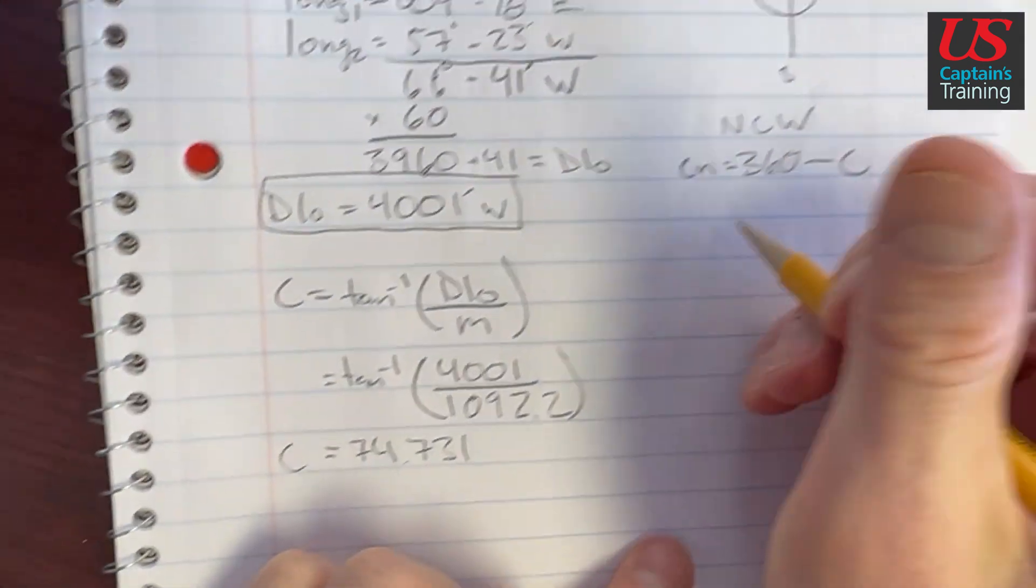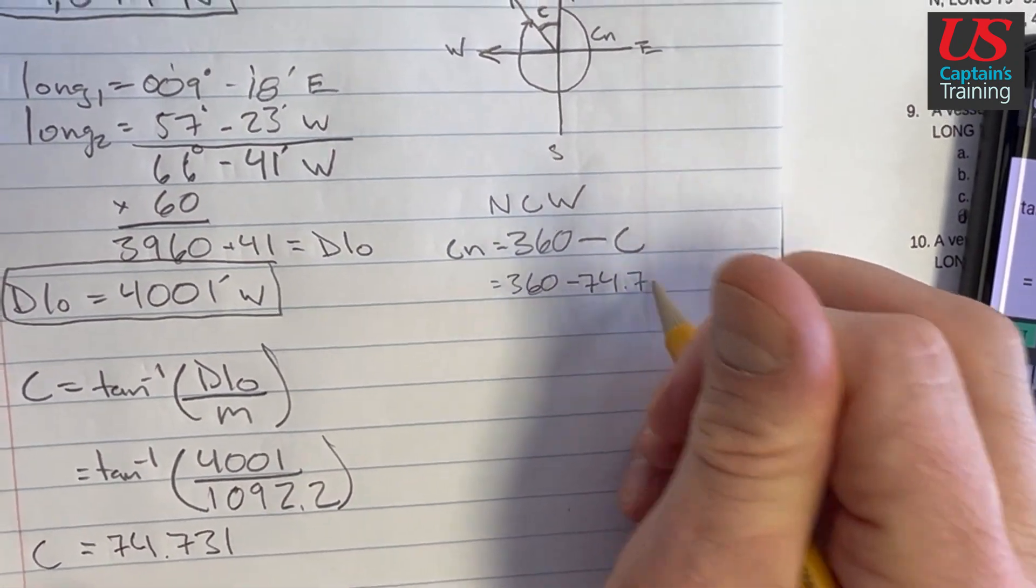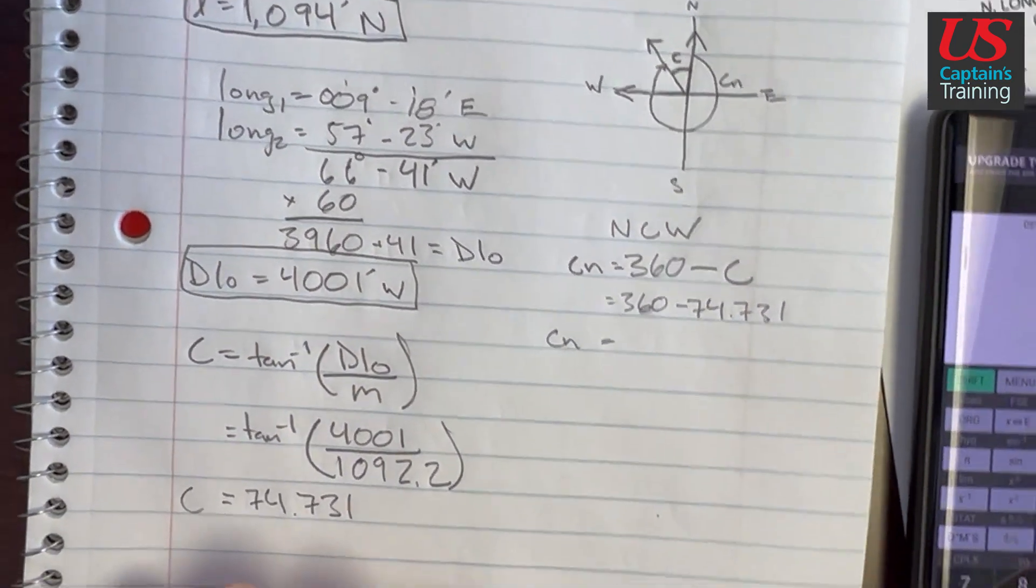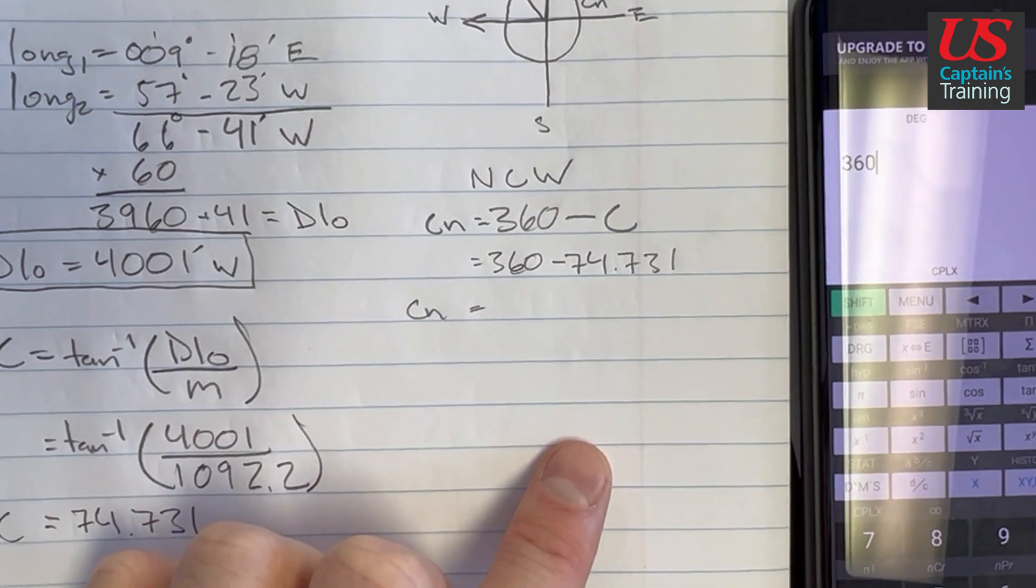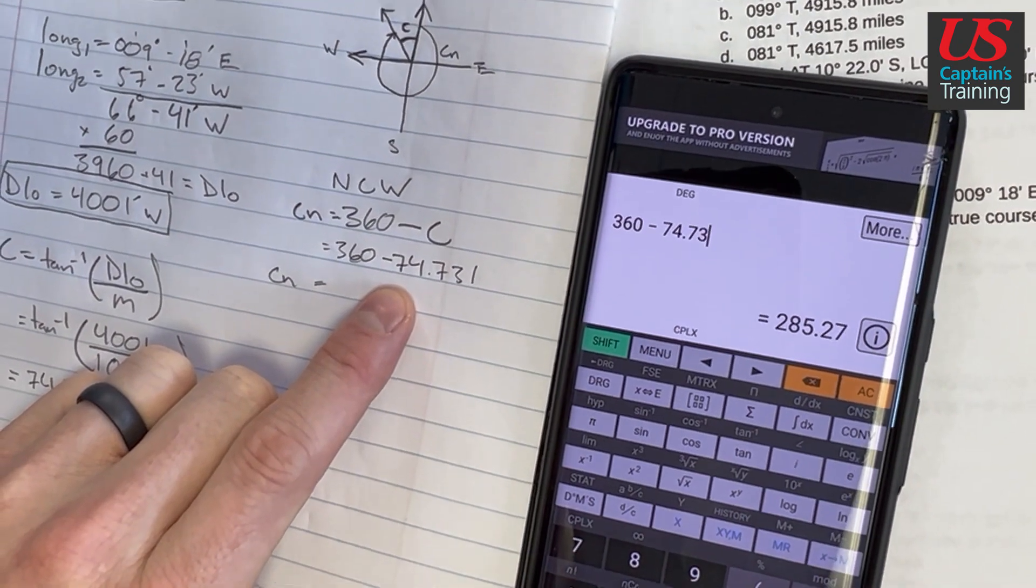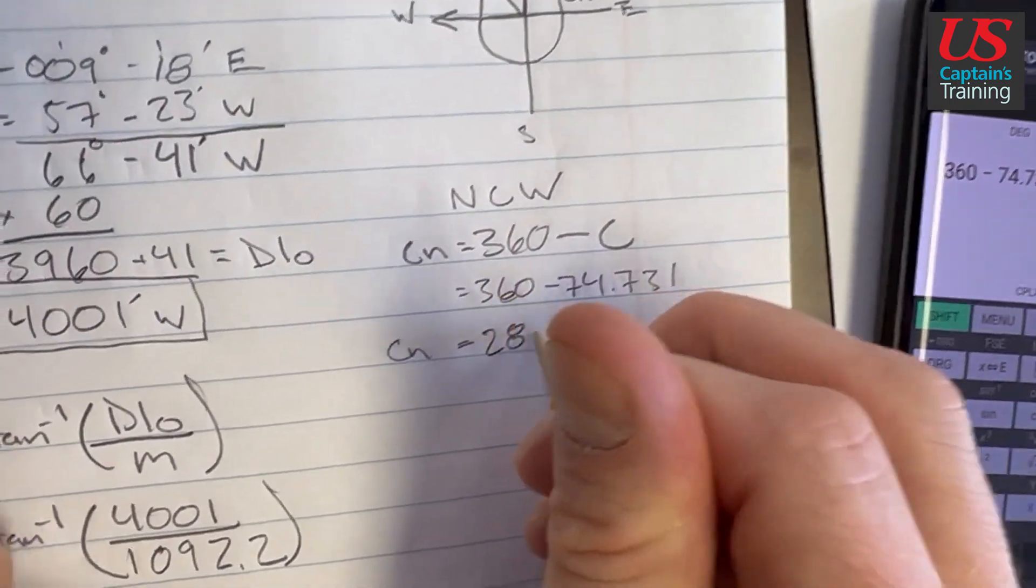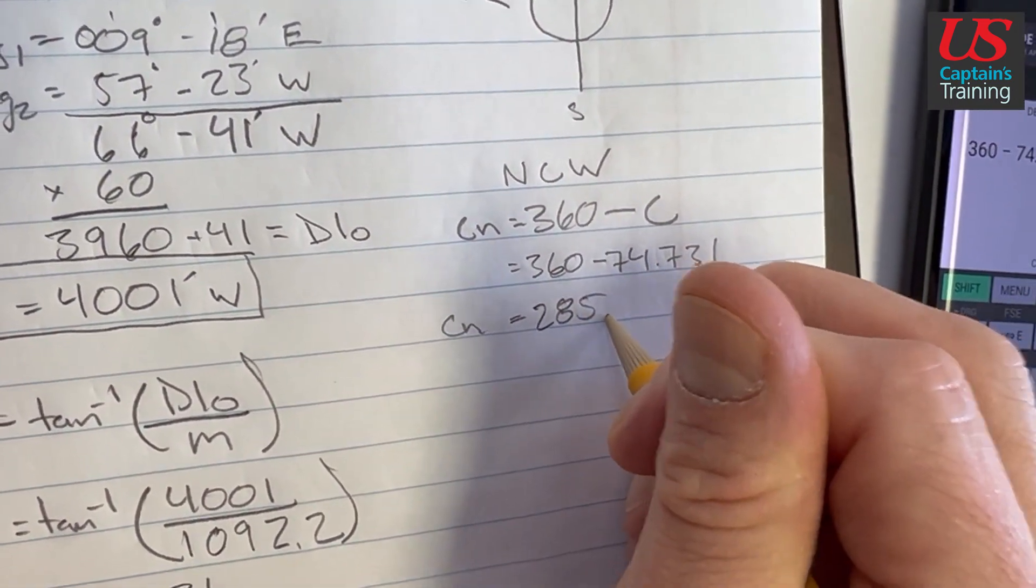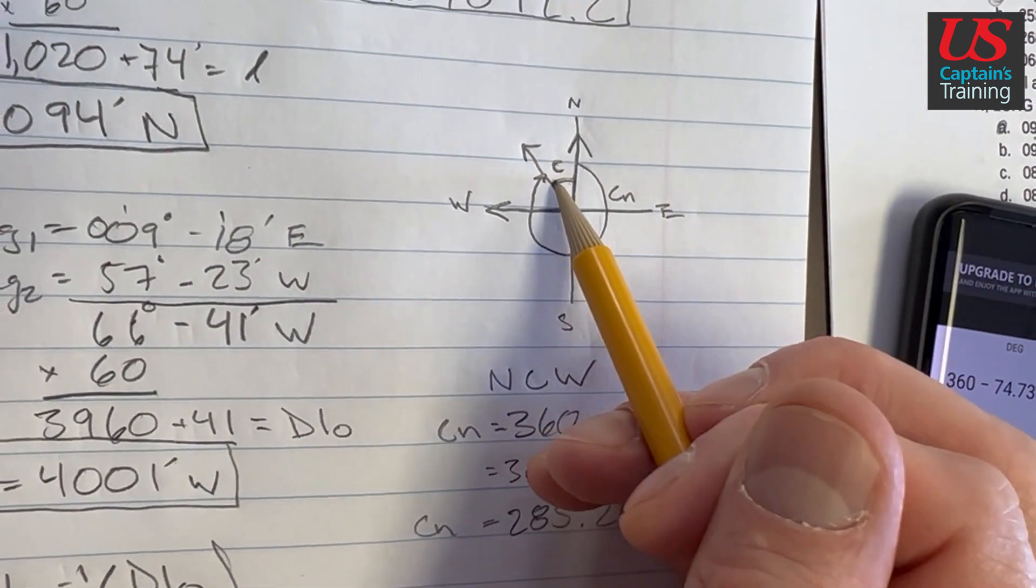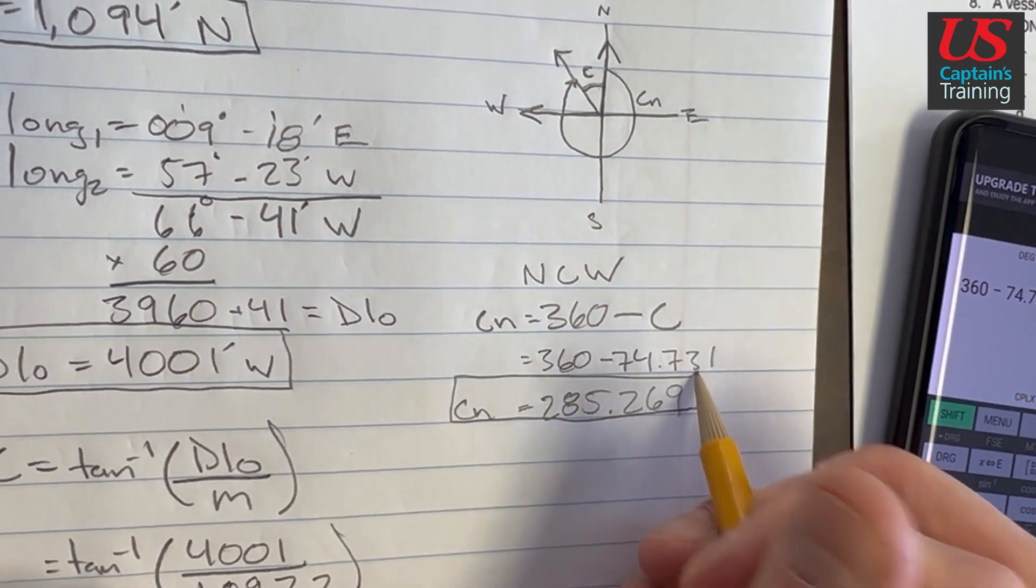Now we can plug that C in here. So we have 360 degrees, 360 minus 74.731. CN is equal to 360 minus 74.731, 285.269. All right, so that was 360 minus C, which gives us our course from north. This will be listed in the answers.